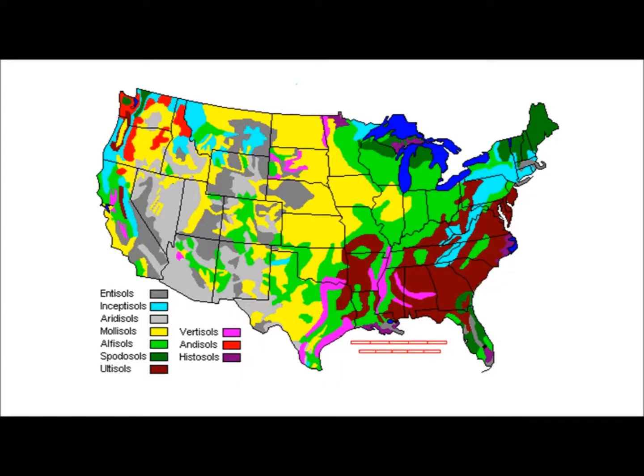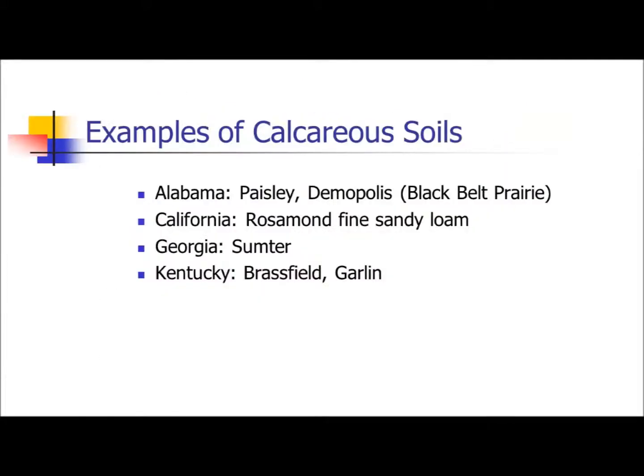Same thing in the U.S. — we also don't have a calcareous soil map, but in the future we'll probably make one. You can find calcareous soils anywhere in the U.S. Just a few examples: Alabama, California, Georgia, Kentucky. Last week I went to California for the ASA meeting and saw very gravelly soil, just like the soil in Homestead. So you can find calcareous areas anywhere and I wouldn't be surprised if you have calcareous soils in your area.